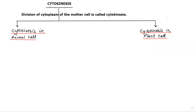After the telophase stage of mitosis, nuclear division takes place — that is karyokinesis — followed by cytokinesis, which is the division of the cytoplasm. Cytokinesis is the division of the cytoplasm of the mother cell. Let's compare cytokinesis in animal cells and cytokinesis in plant cells.